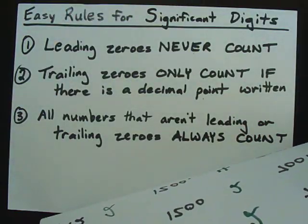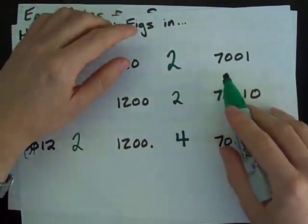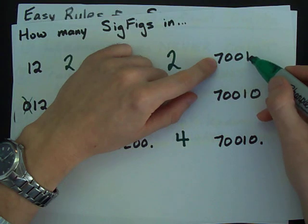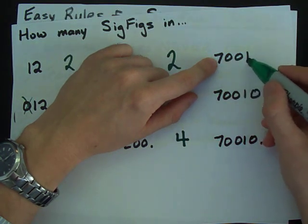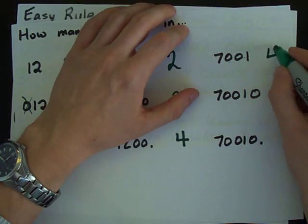Finally, all numbers that aren't leading or trailing zeros always count. So, here we have a seven at the beginning, a one at the end. All the numbers in between count. One, two, three, four significant figures.